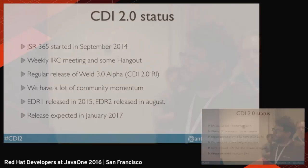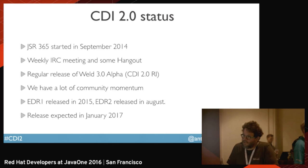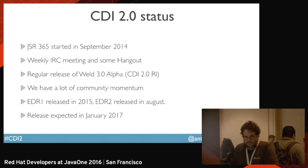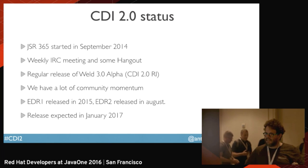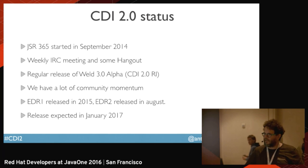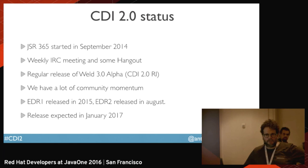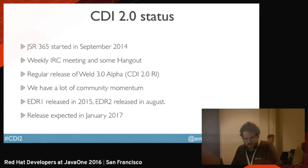The CDI 2 status: we started the CDI specification two years ago. We have weekly meetings on IRC and regular releases of the reference implementation. Lately we released Weld Alpha 17, which is the reference implementation for our Early Draft 2. You can play with this new Weld 3 Alpha to test the new features I'll show you — grab it on Maven Central or download it. We also released an early draft during the summer.